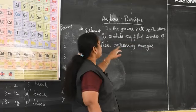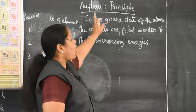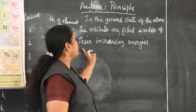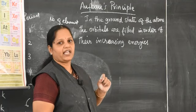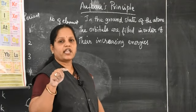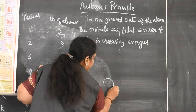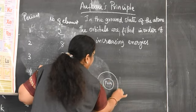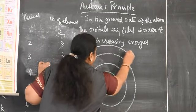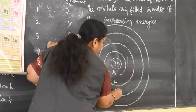In the ground state, orbitals S, P, D, F are filled in order of increasing energy. An atom is sphere-shaped, with electrons revolving in circular paths around the nucleus. The main shells are K, L, M, N (represented by principal quantum number n = 1, 2, 3, 4). The orbitals within them are S, P, D, F.